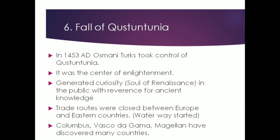The sixth cause is the fall of Constantinople — an ancient city in modern-day Turkey, now known as Istanbul. In 1453 AD, the Ottoman Turks took control of Constantinople, which was the center of enlightenment at that time. After the conquest by the Turks, scholars from Constantinople fled and sought refuge in the countries of Europe. They attracted the people's attention to ancient literature and knowledge, generating a new curiosity in the public with reverence for ancient knowledge. This curiosity was considered the soul of Renaissance in Europe.